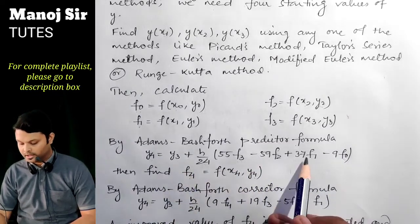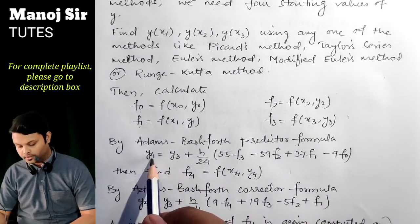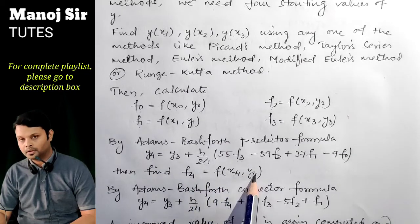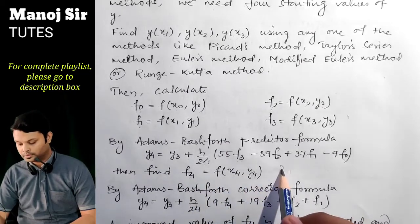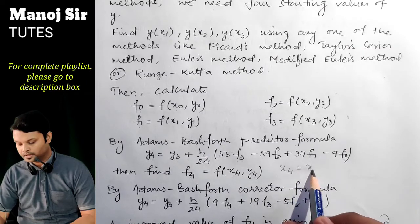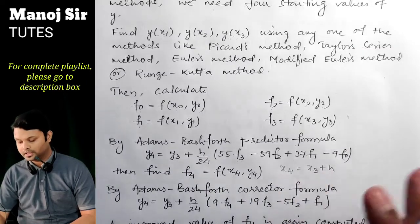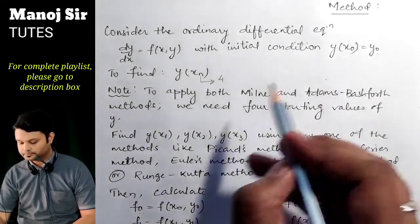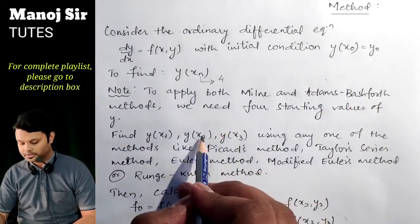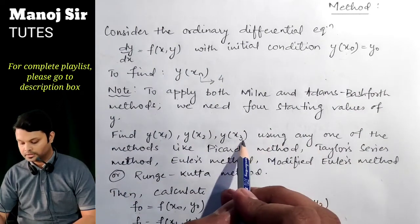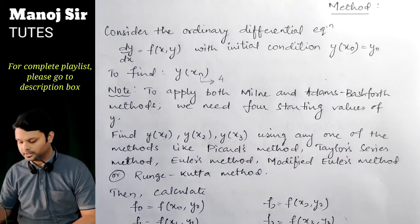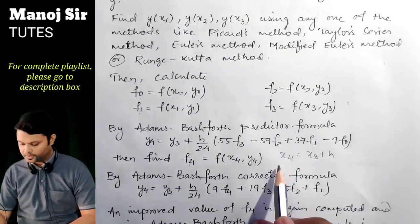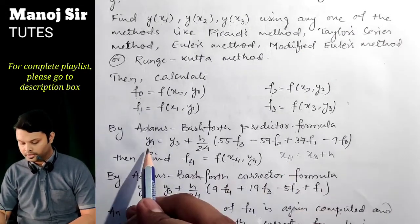After finding y₄, calculate f₄ = f(x₄, y₄). To find x₄, use x₄ = x₃ + h, where h is the width of differencing, equal to x₁ − x₀ = x₂ − x₁ = x₃ − x₂ = h. Once x₄ is known and y₄ is available, we can compute f₄.